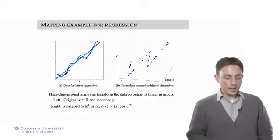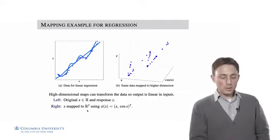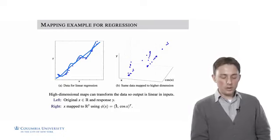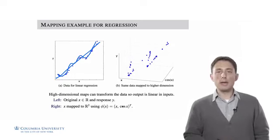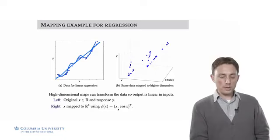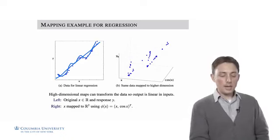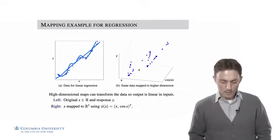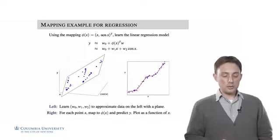This is the original space. Now we take the data from the original space and map it to R^2 using this mapping. We take x and map it from R^1 to R^2, where the first dimension remains x, but the second dimension is the cosine of x. So now this is our two-dimensional input and we want to do a linear model there. We see now that we have a two-dimensional input space and again a one-dimensional response space.